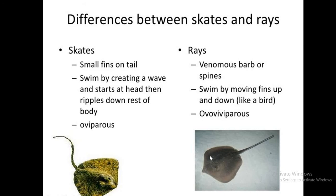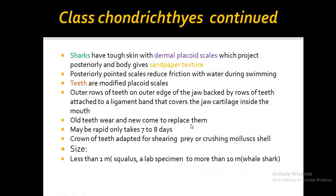Looking at the skates and rays diagram, you can see differences in their fins. Skates have small fins, while rays have a venomous barbed spine or spines on their tail. In swimming, skates move the head down toward the rest of the body and roll the head, while rays move their fins in a bird-like manner to propel the rest of the body.